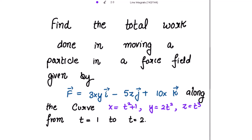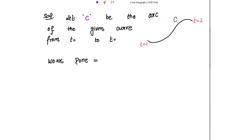Work done is the product of force and displacement. So taking that force field to be the F vector and its product with the displacement dr vector. Let C be the arc of the given curve from t = 1 to t = 2. The work done is equal to the integral of the dot product of F vector with dr vector over C.